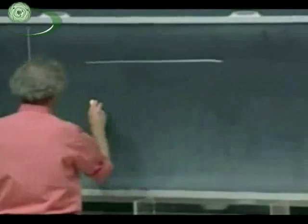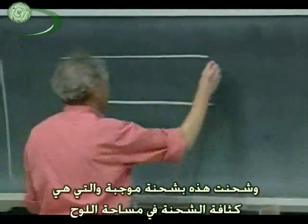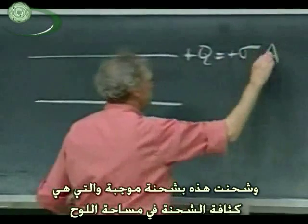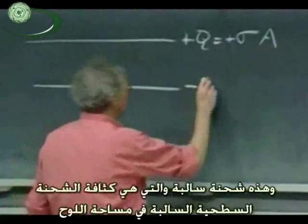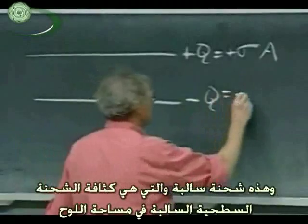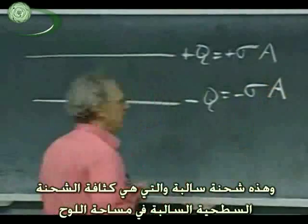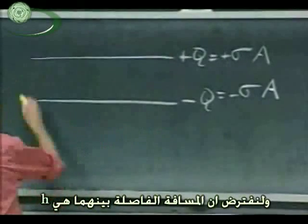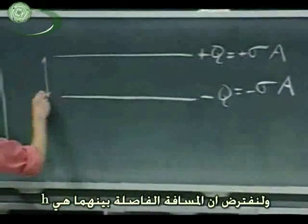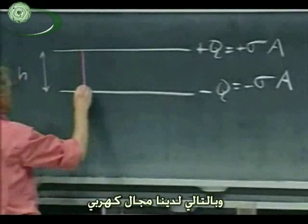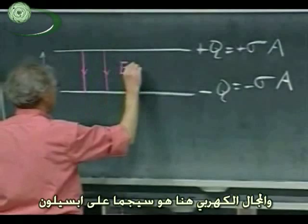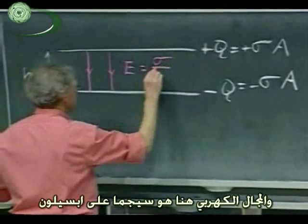Suppose I have two parallel plates. I charge this one with positive charge, which is the surface charge density times the area of the plate, and this one with negative charge, which is the surface charge density negative times the area of the plate. Let's assume that the separation between these two is H. We have an electric field which is approximately constant, and the electric field here is sigma divided by epsilon zero.